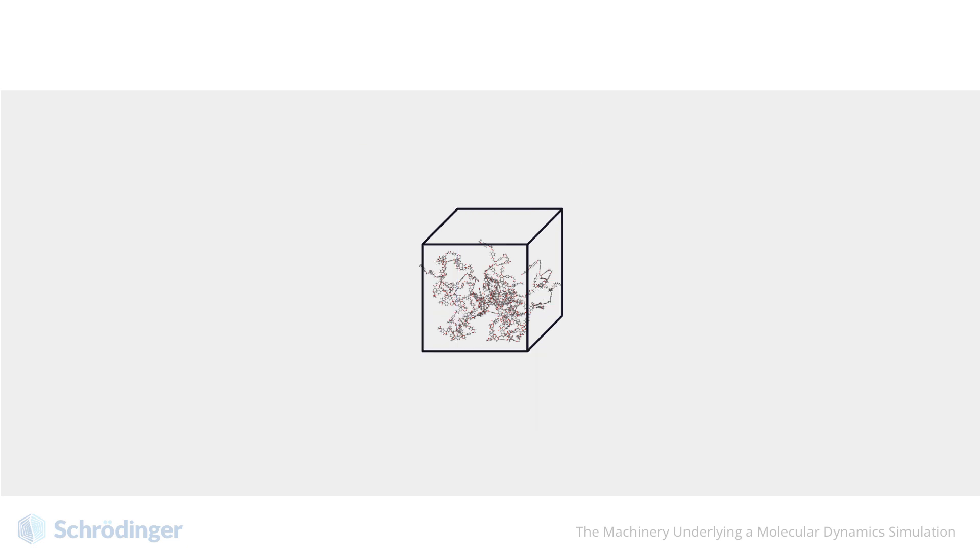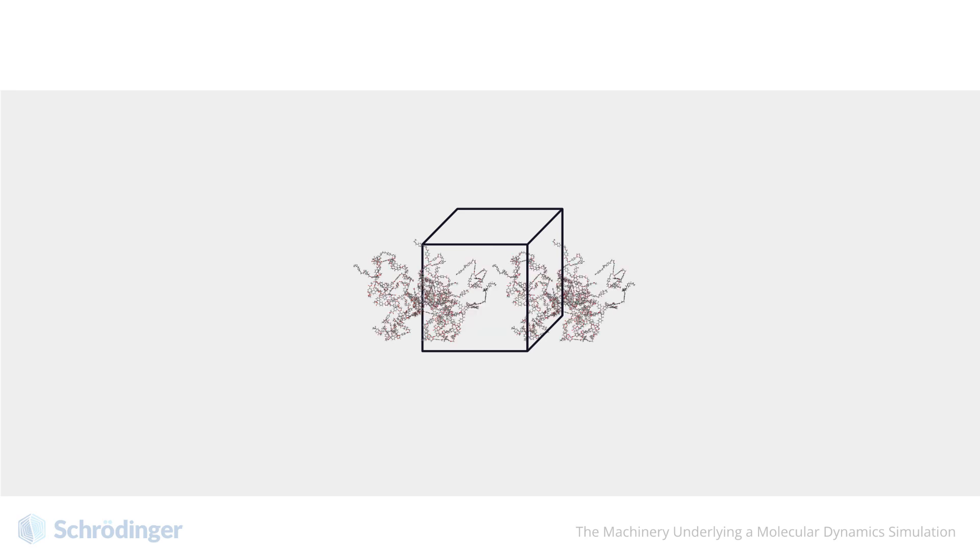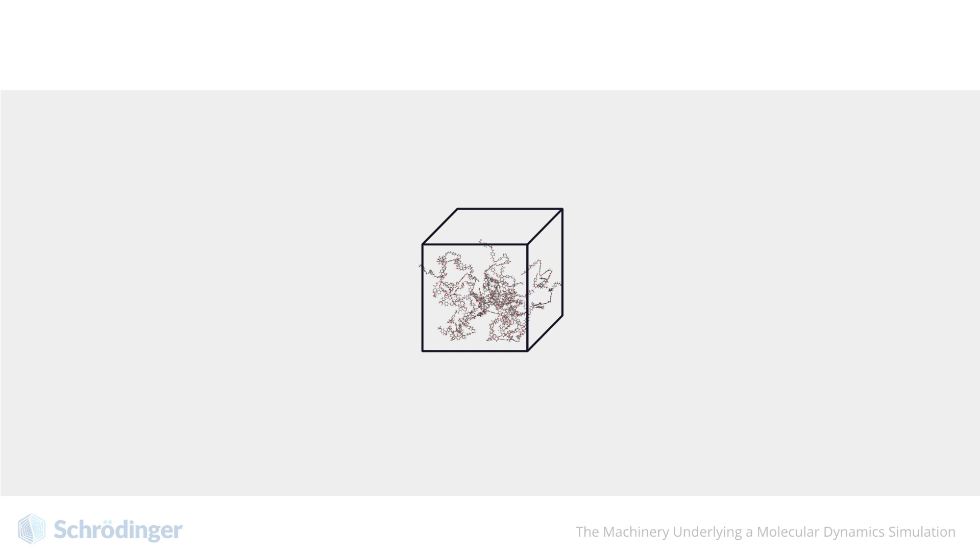If a particle or molecule passes through one side of the unit cell, it will re-enter the other side. This allows more accurate estimation of bulk properties from simulations of finite size. A good simulation of a relatively small system with periodic boundary conditions can be a good approximation to the behavior of the system in a larger bulk phase.